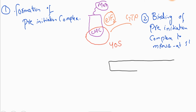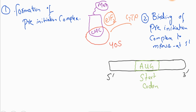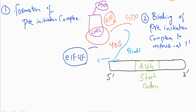After formation of the pre-initiation complex, the second step is binding of the pre-initiation complex to the messenger RNA at the 5 prime end. This binding also requires the protein complexes eIF4F and eIF3.